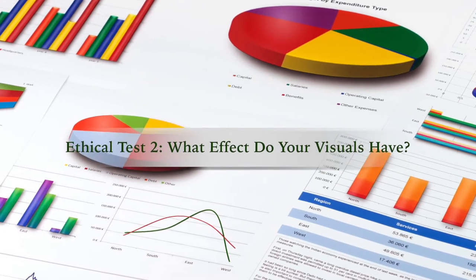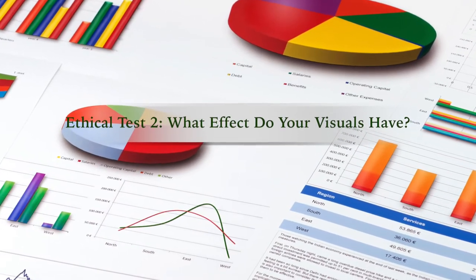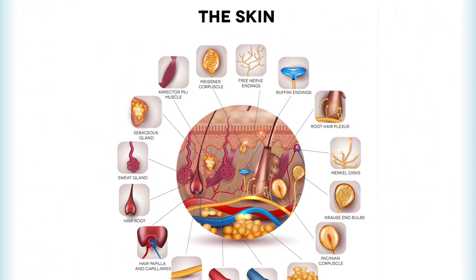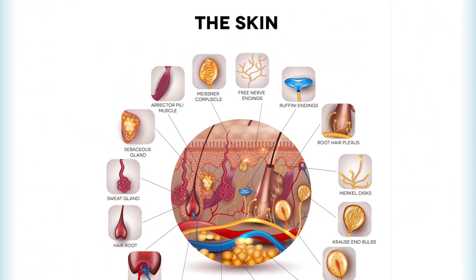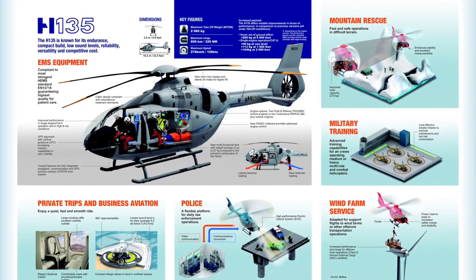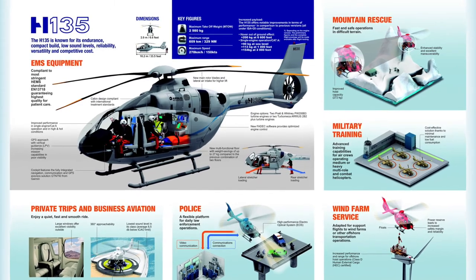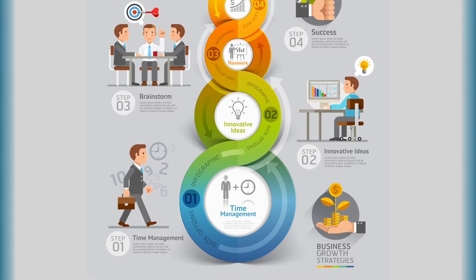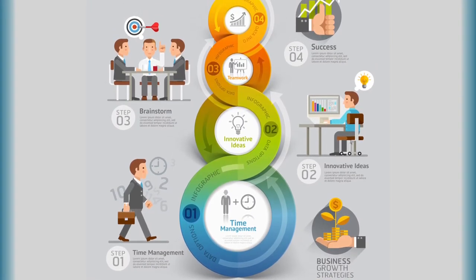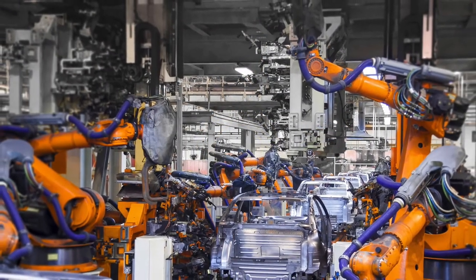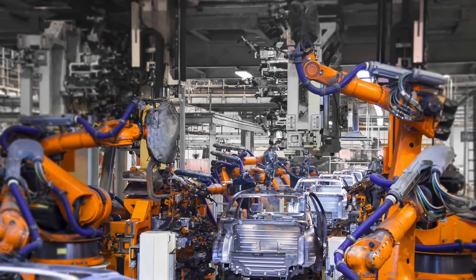Even if your intent is ethical, you can still mislead audiences through design mistakes or a poor understanding of what the audience needs. This test is more difficult to assess than the first, because you can't always be sure of the effect your visuals have on the audience. However, if you have a clear assessment of your audience members and their information needs, you'll find it easier to craft visuals that provide the information in a straightforward and honest way.